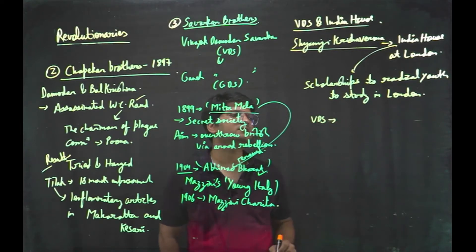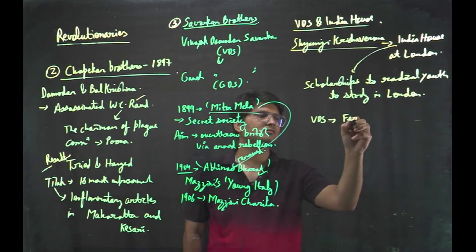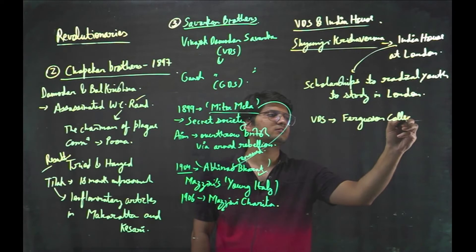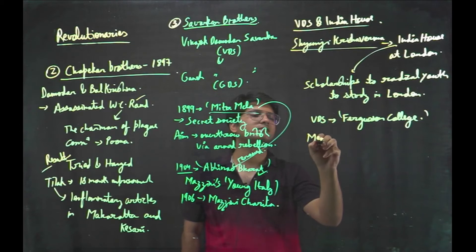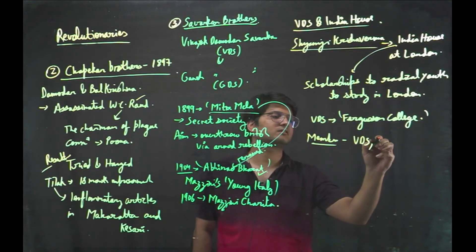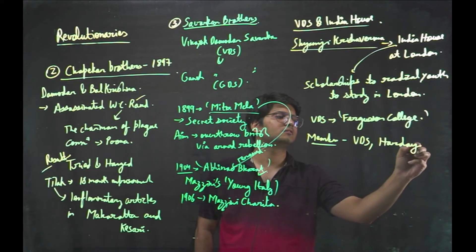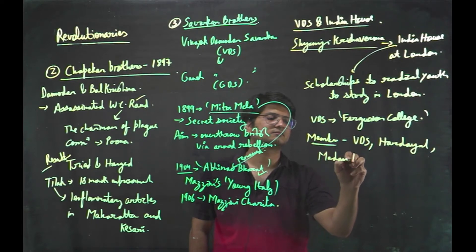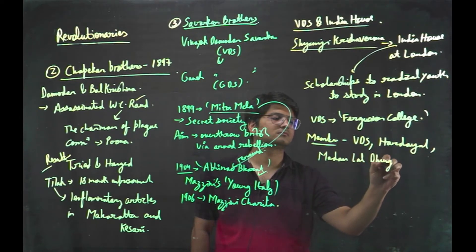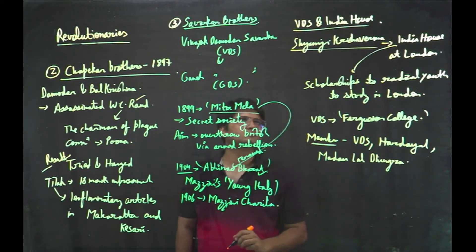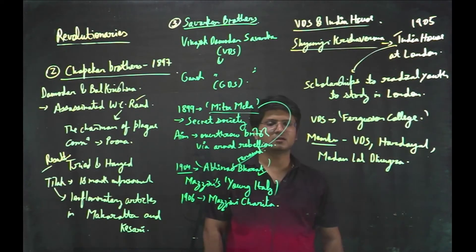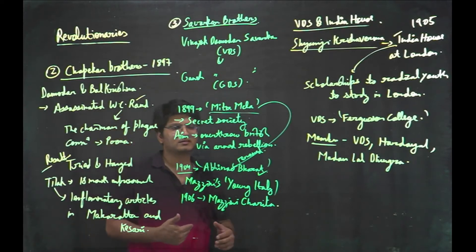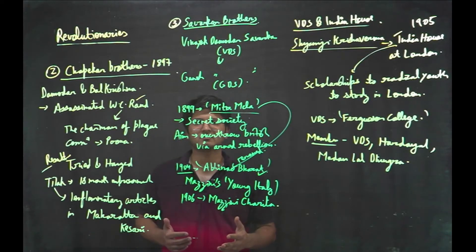Veer Savarkar availed the scholarship and studied in Ferguson College. Other prominent members of this India House were Veer Savarkar, Lala Hardyal and Madan Lal Dingra. This India House was started in 1905. Veer Savarkar found the Free India Society to train the youth for an armed rebellion, for warfare, guerrilla warfare.